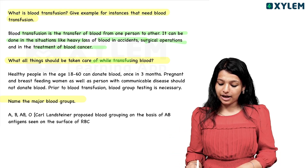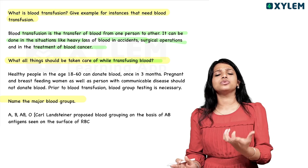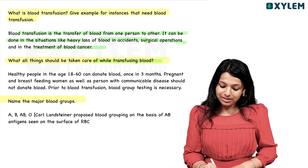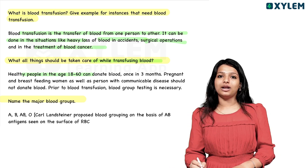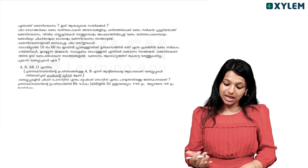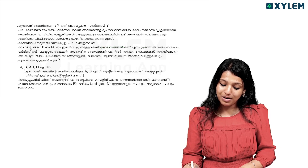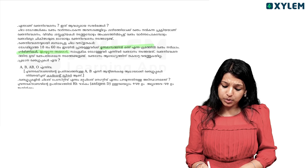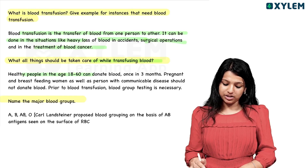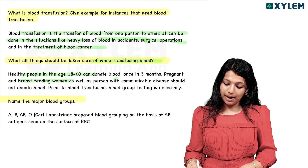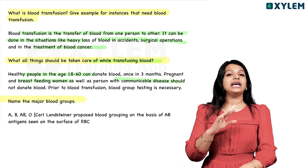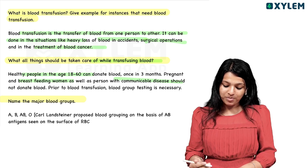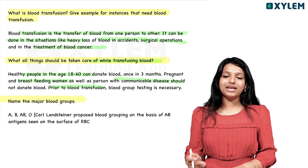What precautions should be taken while transfusing blood? We should match the blood group. Healthy people aged 18 to 60 can donate blood, once every 3 months. Breastfeeding women, people with communicable diseases, and pregnant ladies should not donate. Prior to blood transfusion, blood group testing is necessary.